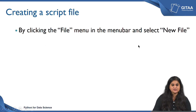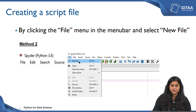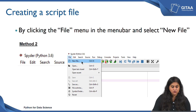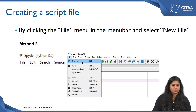The second method is by clicking on the file menu and then selecting new file. You can see the file menu here and then click on new file. Apart from these two methods you always have a fallback option of using the keyboard shortcut Ctrl+N. All three methods will right away open a script file for you.